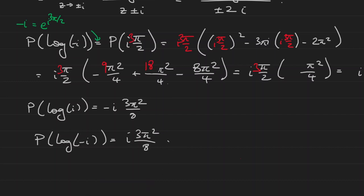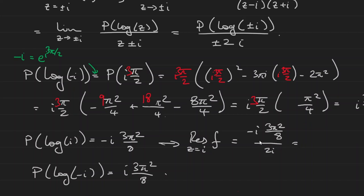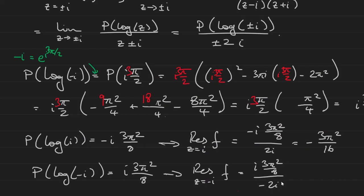Plugging into the residues: Res[f, i] = (−3iπ³/8) / (2i) = −3π²/16... wait, let me restate — Res[f, i] = p(log i)/(2i) = −3iπ³/8 ÷ 2i = −3π²/16. And Res[f, −i] = p(log(−i))/(−2i) = 3iπ³/8 ÷ (−2i) = −3π²/16. Both residues equal −3π²/16.